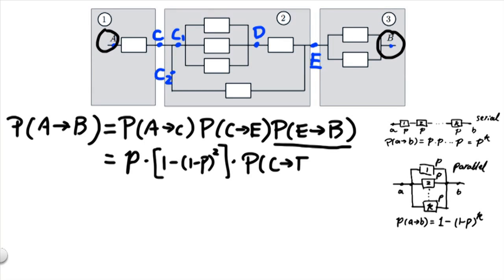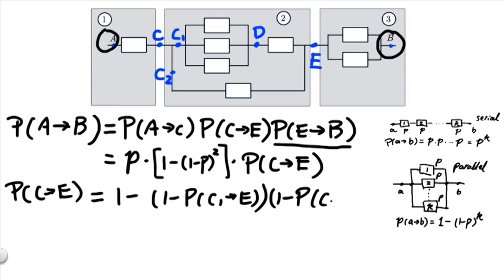And it remains to calculate just the probability of having a good path from point C to point E. To get a value for P(C→E), we notice again that this area can be treated as two components, C1 to E and C2 to E, connected in parallel. And using the parallel law, we get this probability is 1 minus (1-P(C1→E)) multiplied by (1-P(C2→E)).